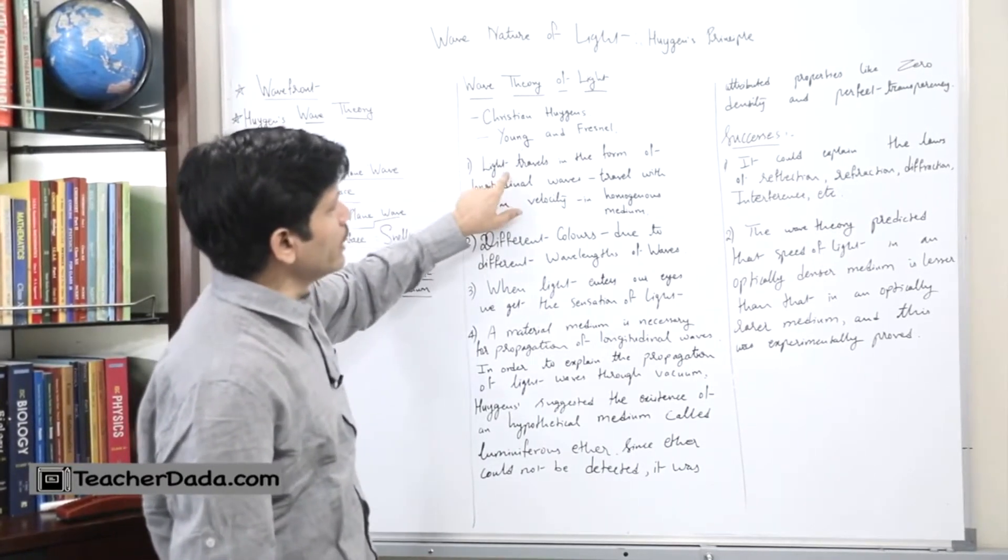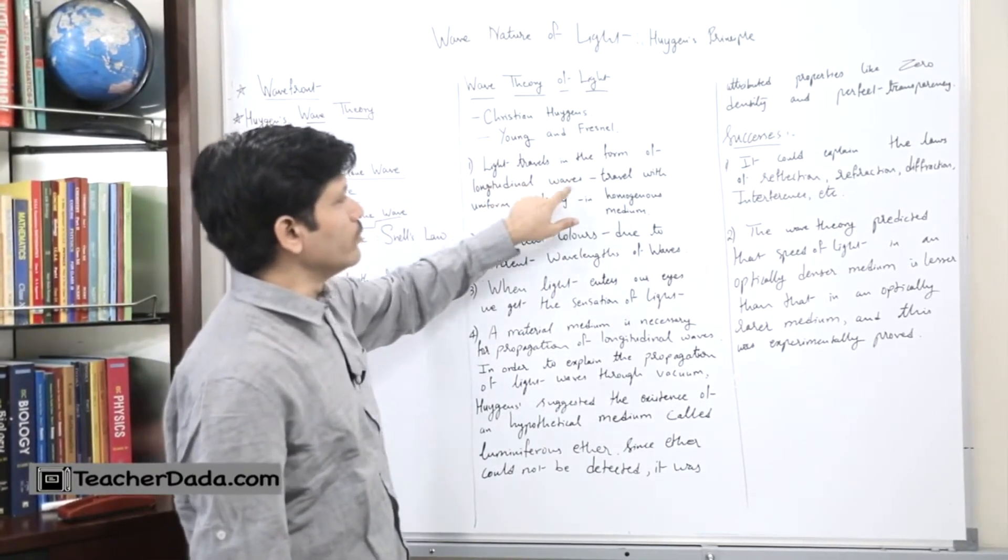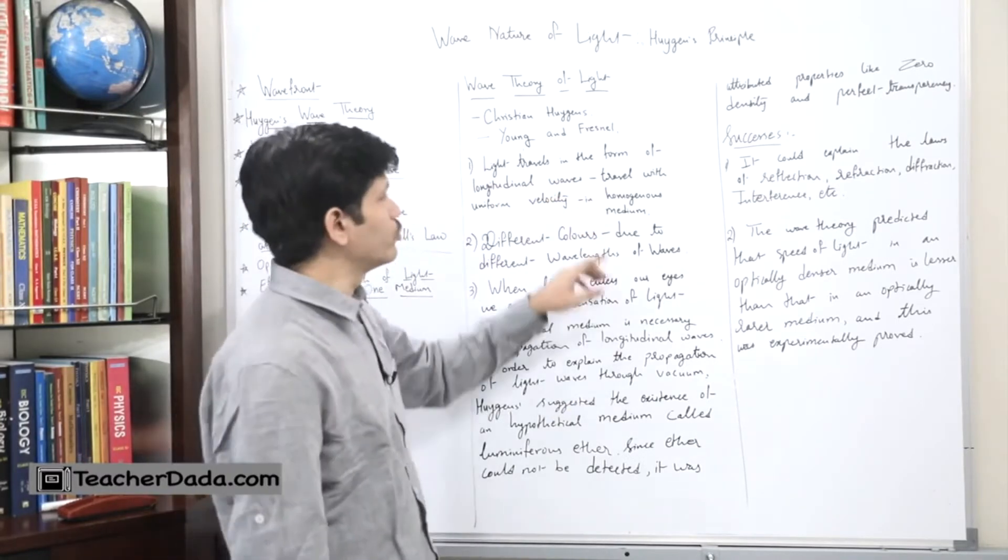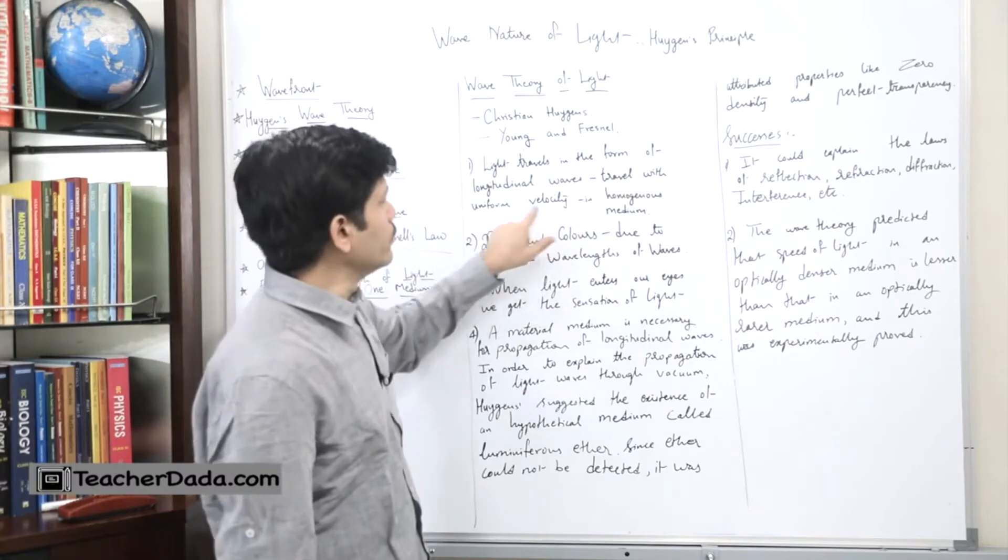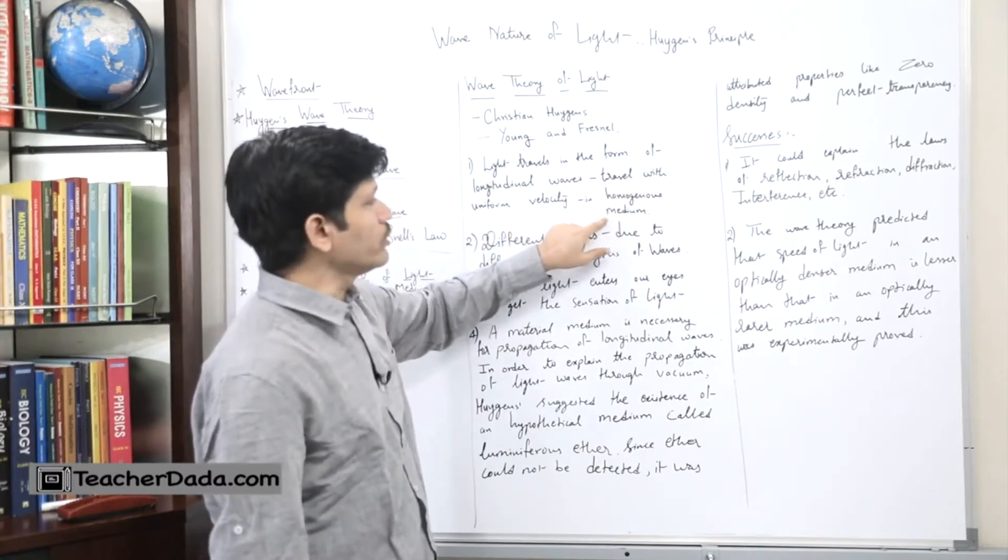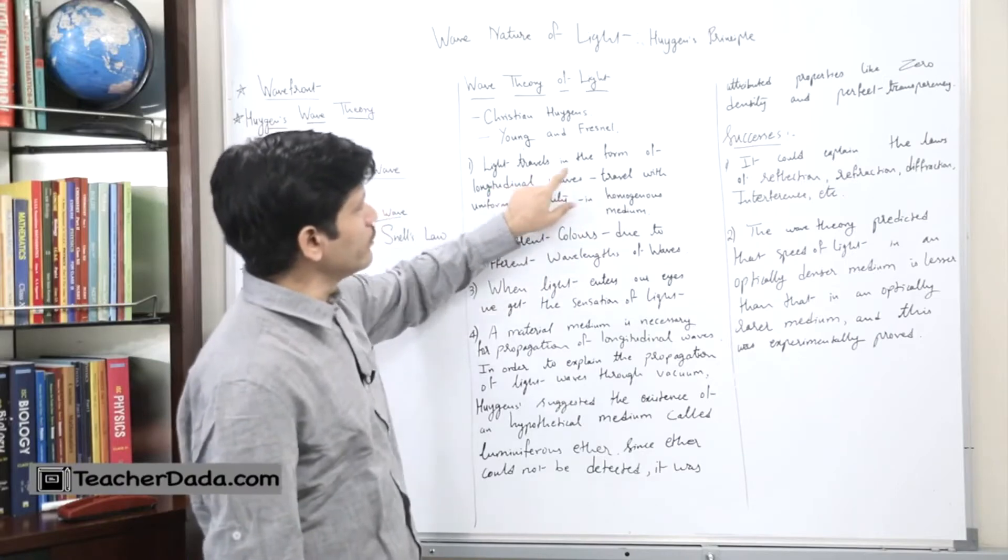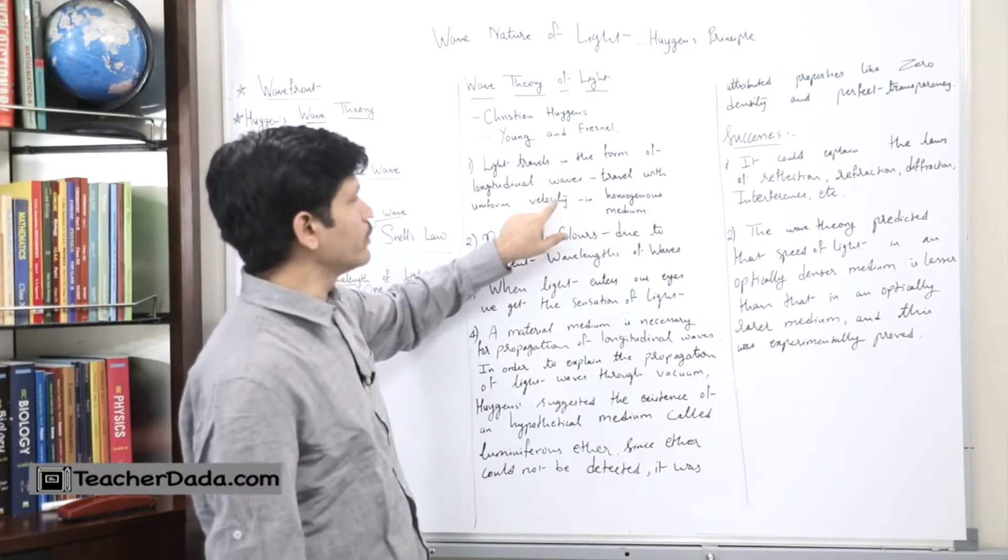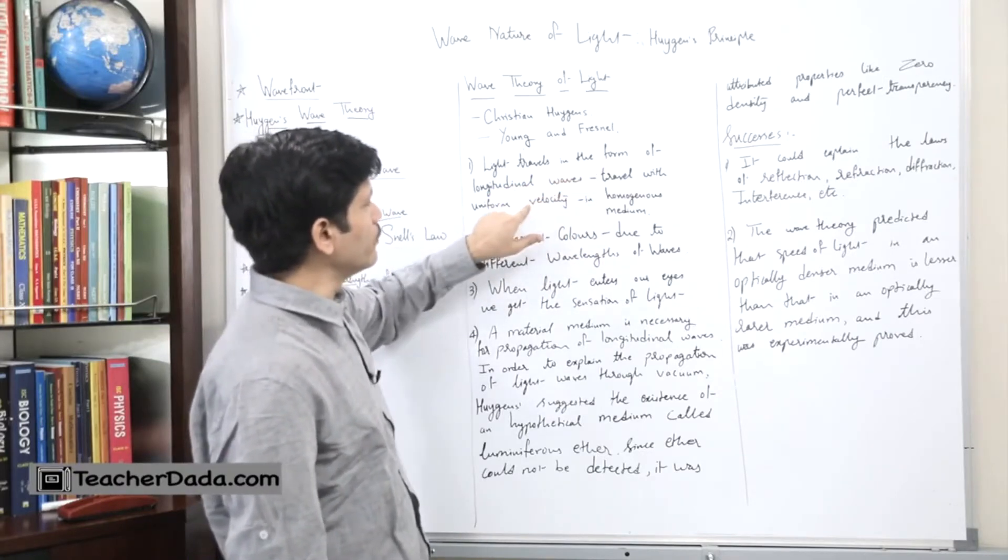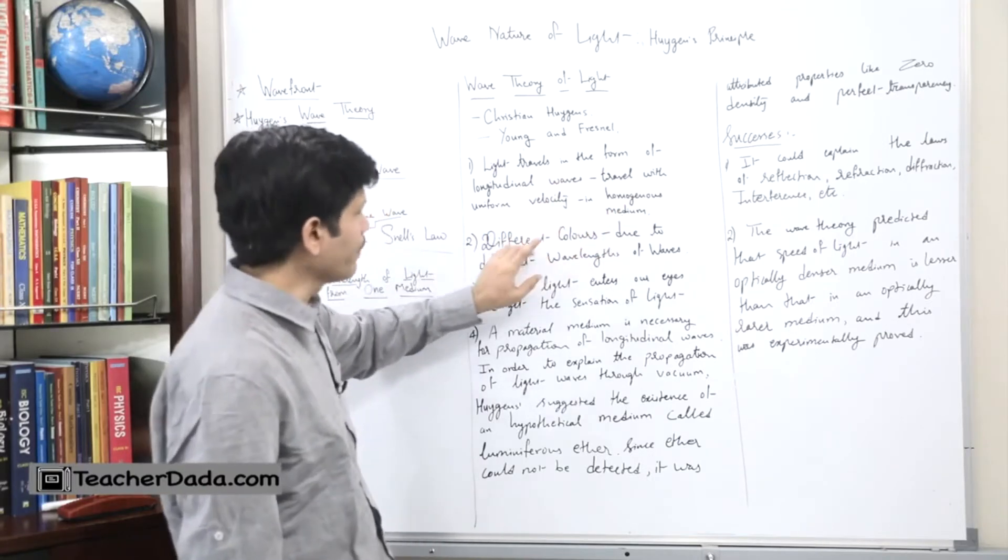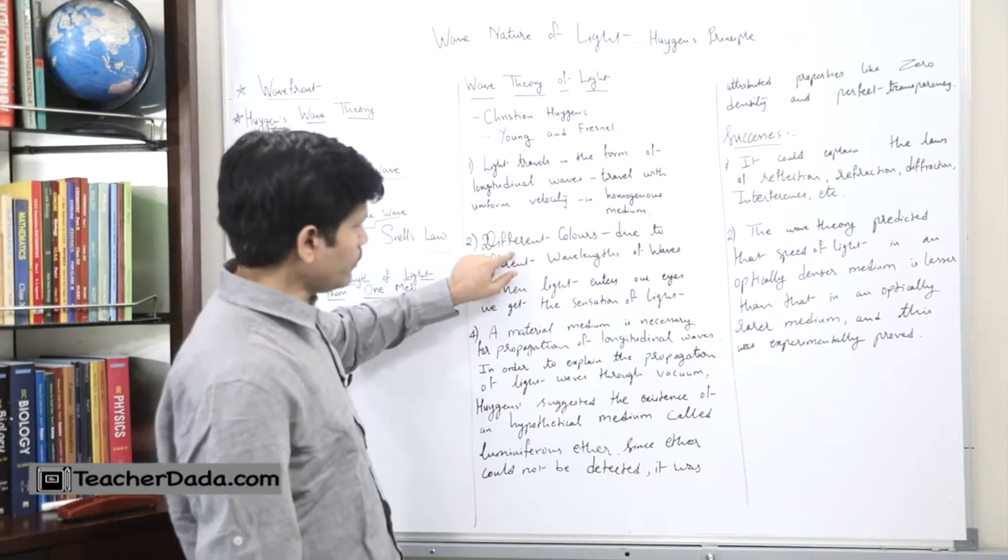First, light travels in the form of longitudinal waves. One example is sound waves. It travels with uniform velocity in homogeneous medium, so the medium will be homogeneous and light travels with uniform velocity.